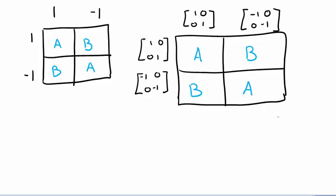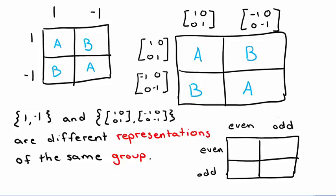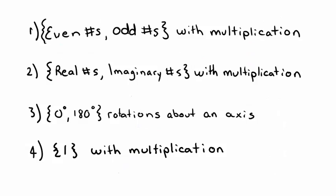When we prove that the two multiplication tables are the same, we can say that {1, -1} and the matrices [[1,0],[0,1]] and [[-1,0],[0,-1]] are different representations of the same group. Another example is the even integers and odd integers with addition, which also follows the ABBA pattern: even+even=even, odd+even=odd, even+odd=odd, odd+odd=even. Now look at some additional examples and determine whether they are representations of this same group or belong to a different group.